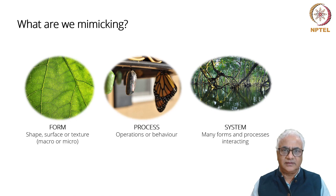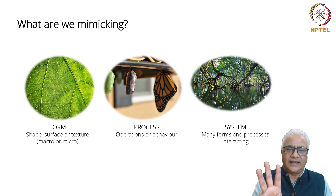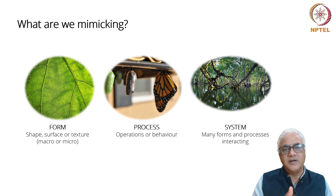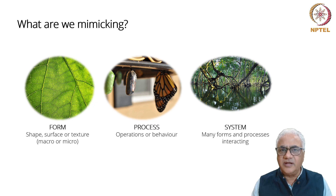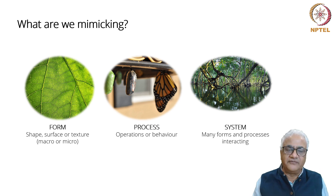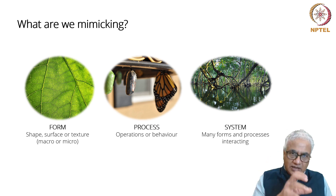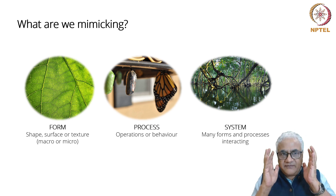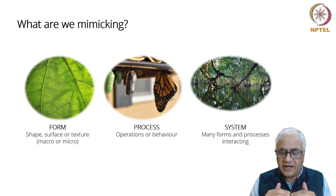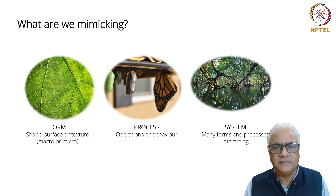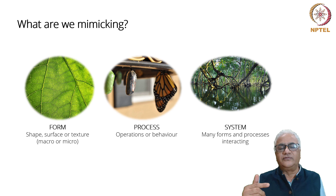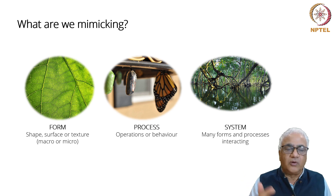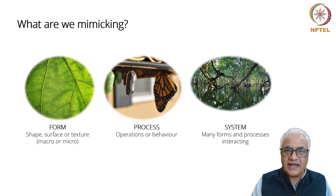So what are we mimicking? We are mimicking three things: form, process, and system. What is the meaning of imitating form? It means shape, surface or texture — macro or micro. So when I imitate in biomimicry, I can mimic form. It's always nice to follow up something with an example. So what could be an example for imitating form?